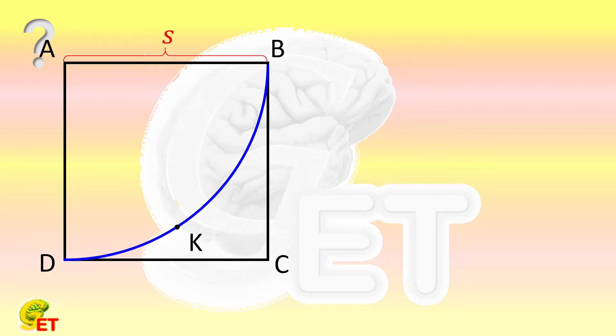We plot the tangent to the arc by crossing point K. BP is perpendicular to this tangent at point P, and DQ is perpendicular to this tangent at point Q.